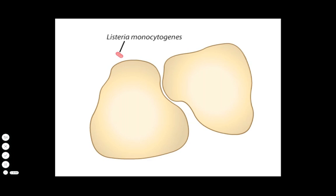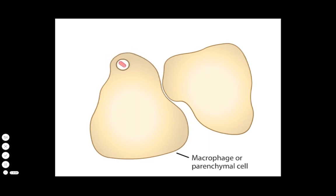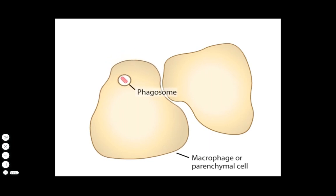When Listeria enters the digestive tract, the immune system mounts an attack. Macrophages engulf the bacteria by phagocytosis, and the internalized vesicle is called a phagosome.